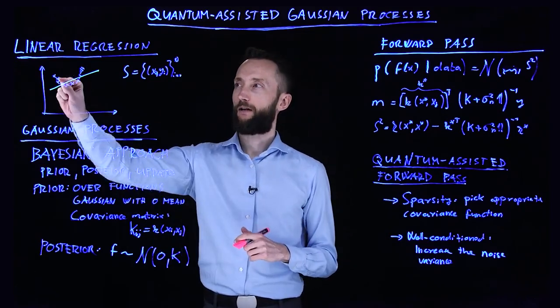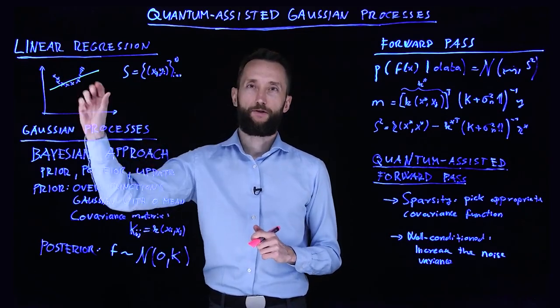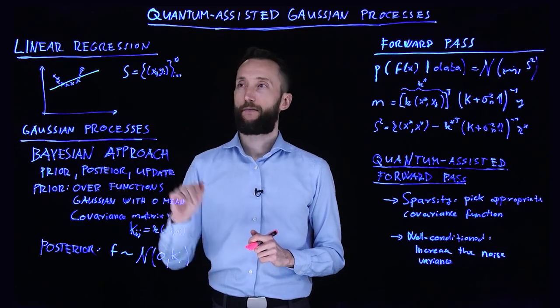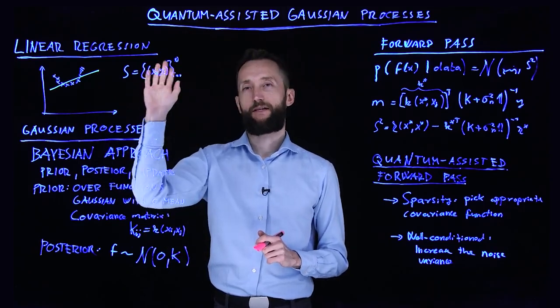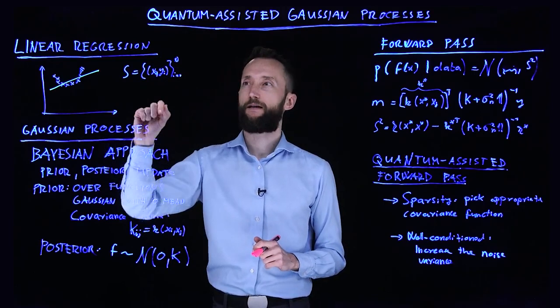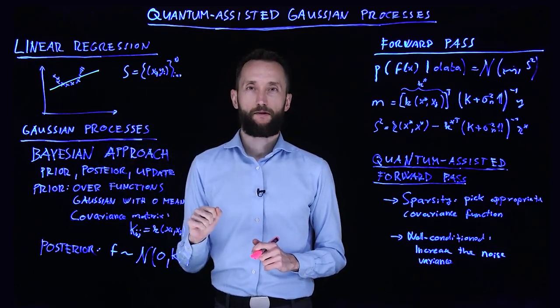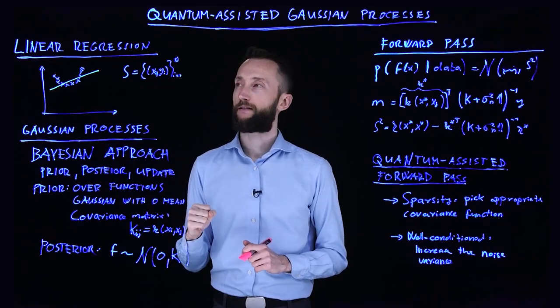Here you are given a couple of points and you want to fit a line to them. The points are given in some high dimensional space—in this case it's just two dimensions—with some corresponding labels, which are real values in this case.